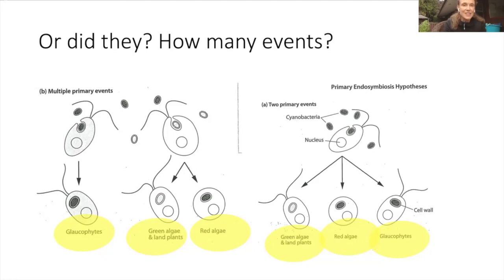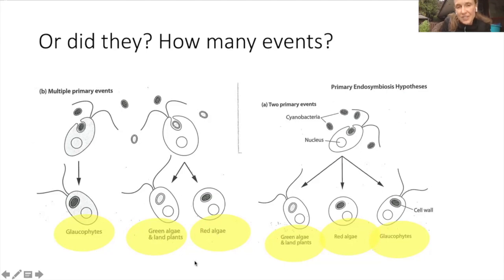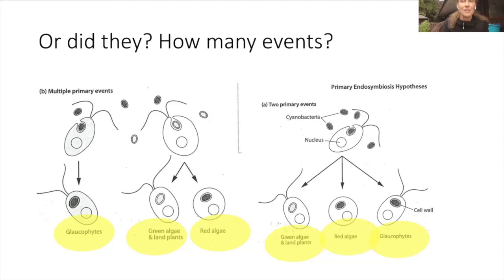In this scenario, there's evidence that there was one event for the glaucophytes and one event for the red algae and the green algae and land plants. So far we can't resolve it - there are just two competing hypotheses.